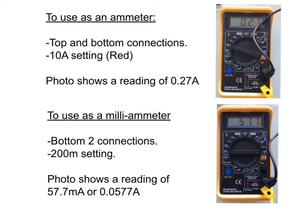We want to use it as an ammeter. First of all, not a milliamp, just an ammeter - we have it in the top and the bottom connections here and we put it on this red 10 amp setting. You can see here on the screen you've got 0.27, which is a reading of 0.27 amps.